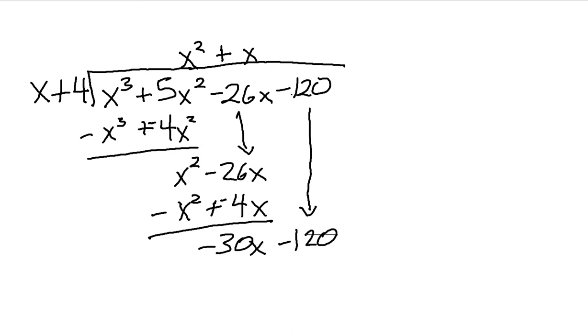Pull down this negative 120. So I need to figure out what times X gives me negative 30X. Again, that's simple enough. You have negative 30 because negative 30 times X gives me negative 30X. Negative 30 times 4 gives me negative 120. Change the sign and add, and I get 0, which is good. If your remainder is not 0, then you made a mistake somewhere.